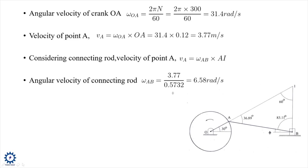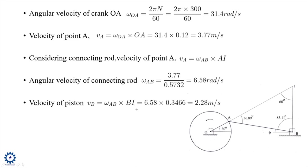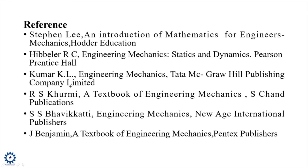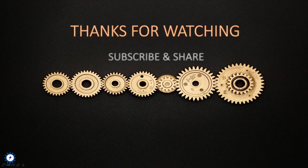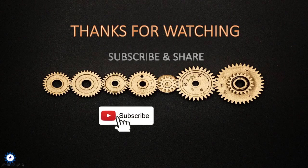Velocity of the piston: vb = omega_AB × BI = 6.58 × 0.3466 = 2.28 m/s. Hope you understood the problems — try to solve more on your own. If you have any doubts, ask in the comment section or join my Telegram channel. Thanks for watching, and please subscribe to Mechanical Classroom for more beneficial videos.